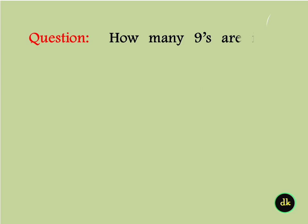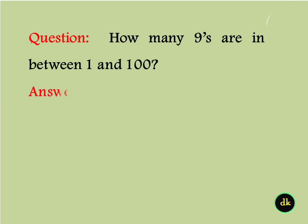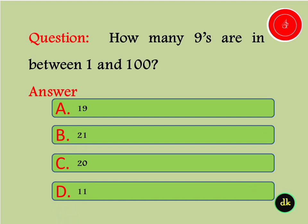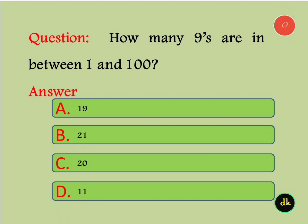How many nails are in between 1 and 100? The answer is 20.